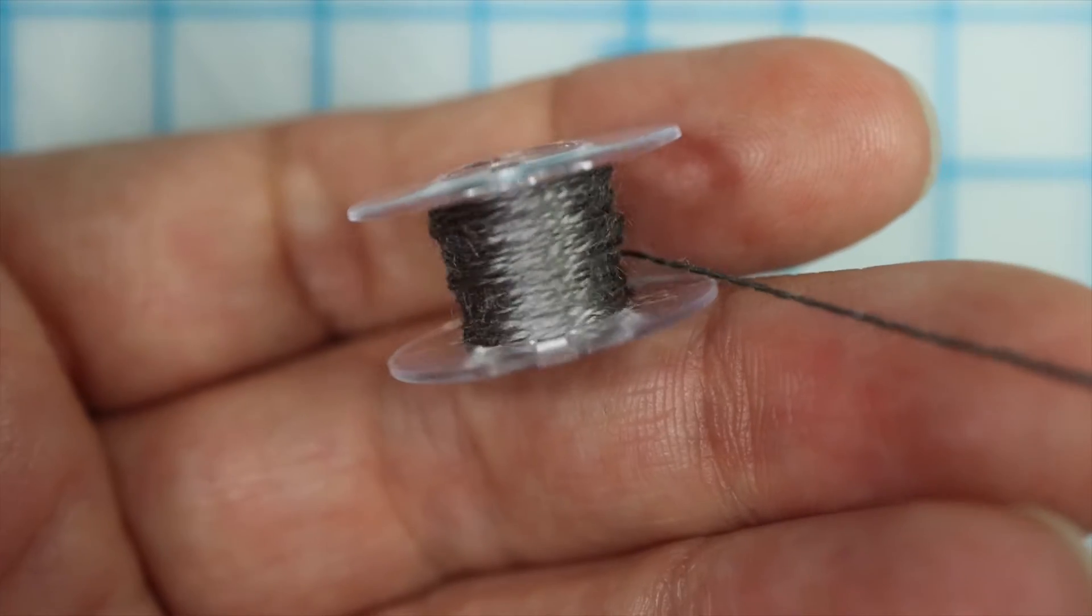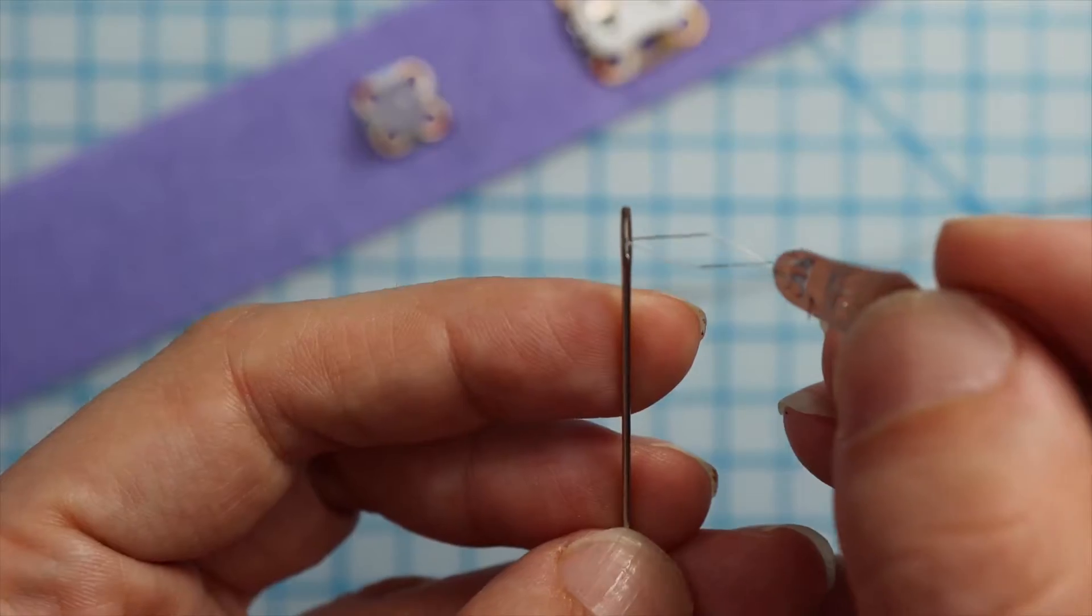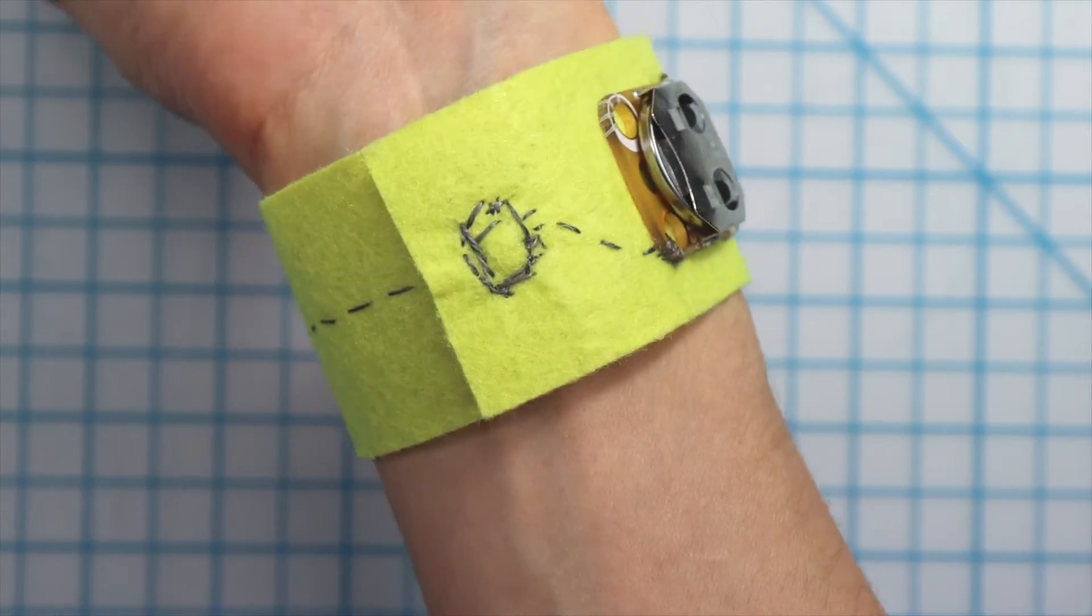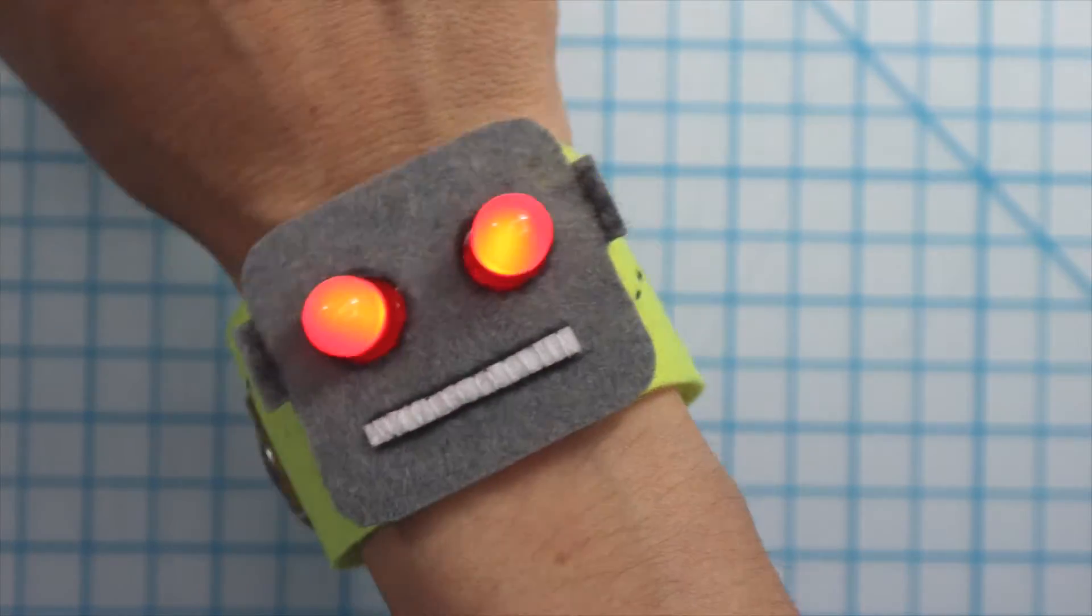The other option is conductive thread. This thread is made of metal fibers so that it conducts electricity but can be sewn like regular thread. The output of the circuit is what it does.